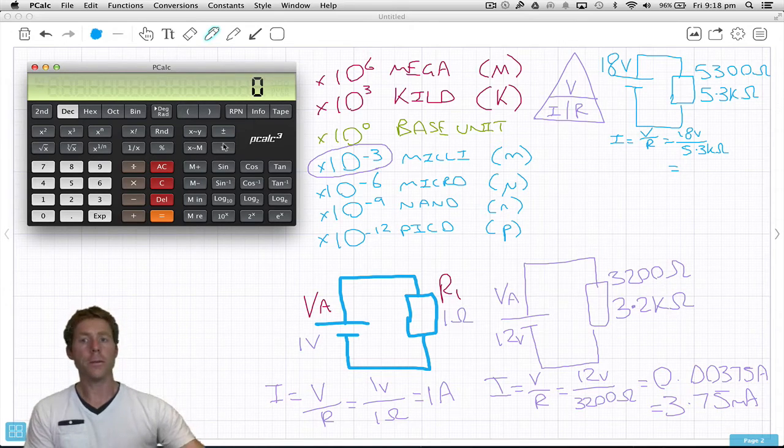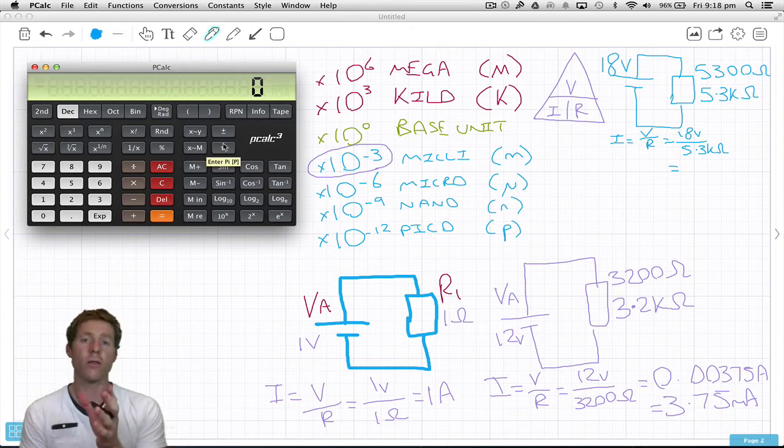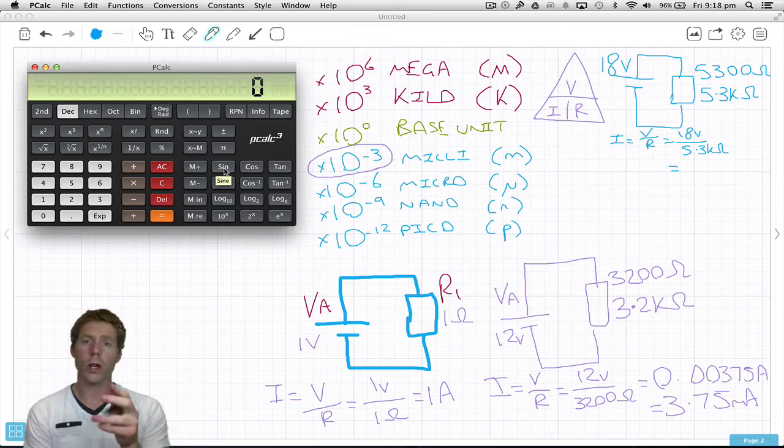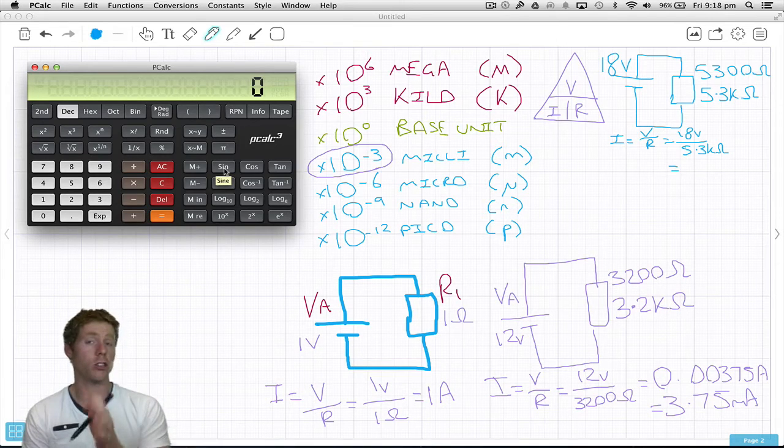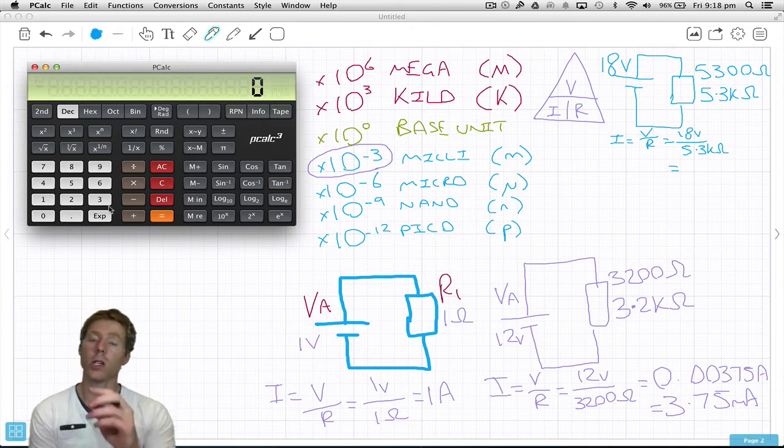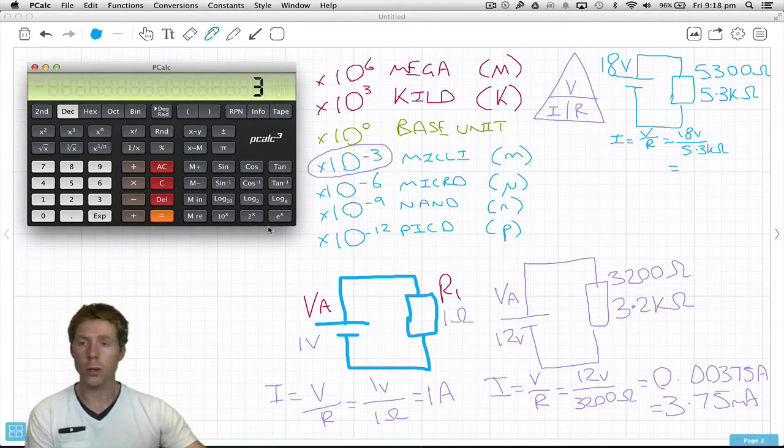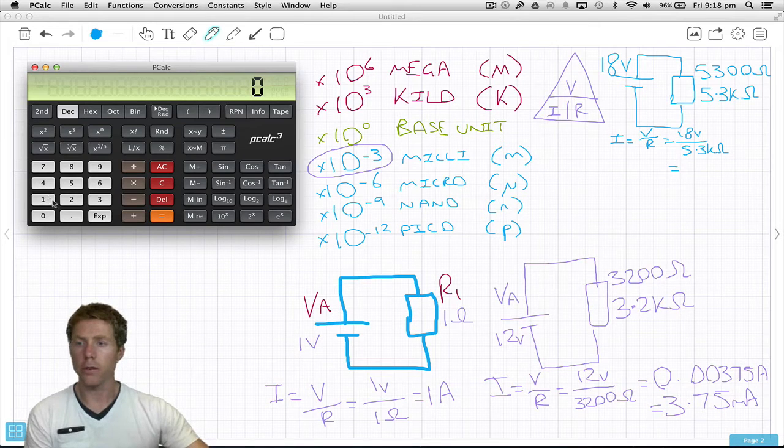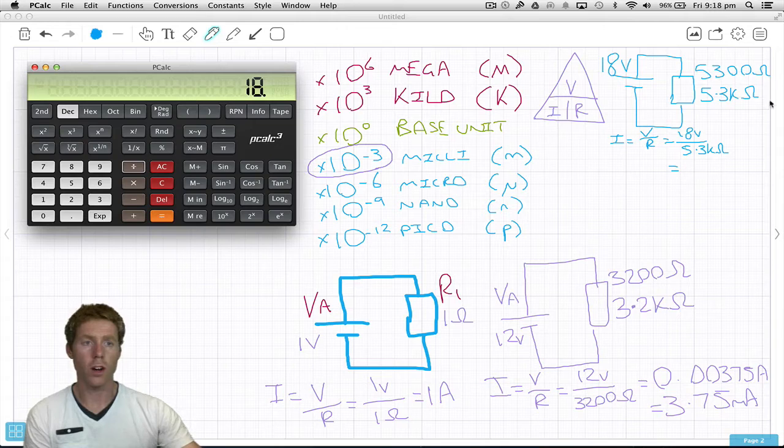Bringing up the calculator. Instead of writing in 5,300 ohms, we'll actually write it in engineering notation using the exponential button. The exponential button means times 10. So we're going to do 18 volts divided by 5.3k.